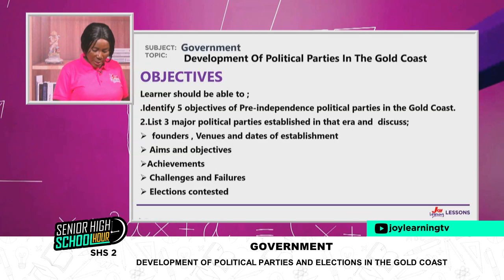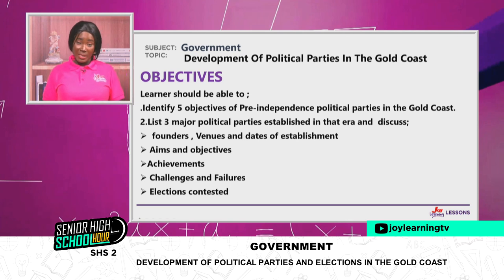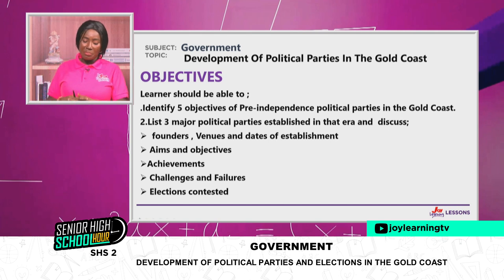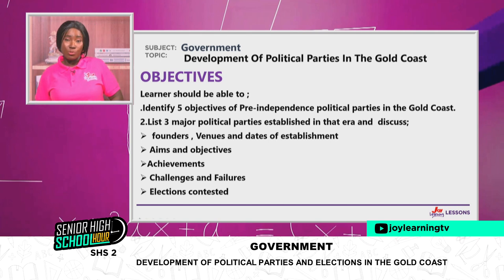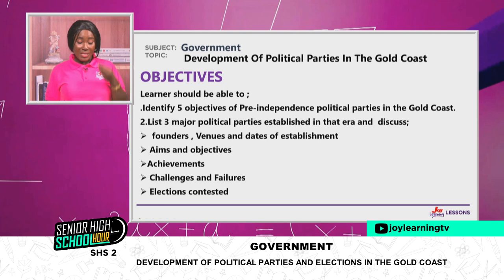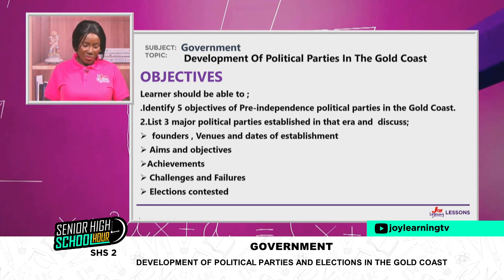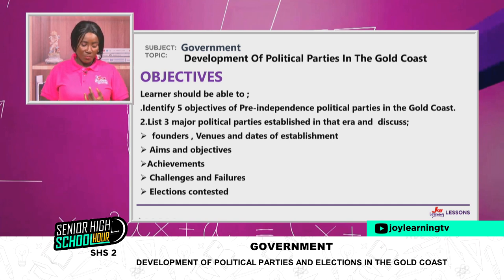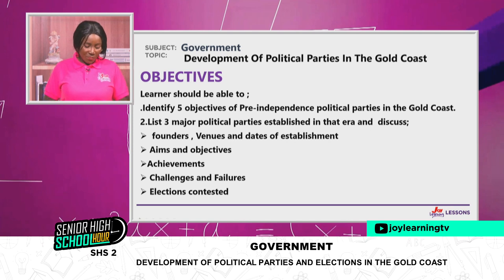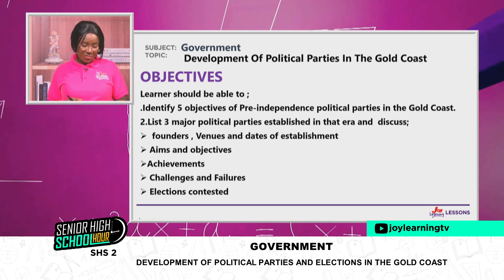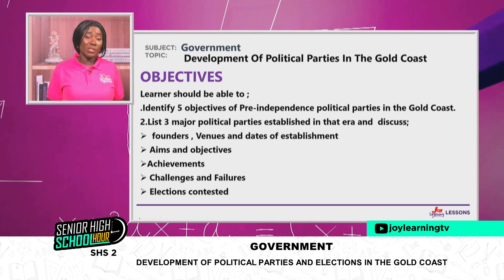Before we move on, let us look at what we want to achieve today. By the time our lesson is over, we should be able to identify five objectives of pre-independence political parties in the Gold Coast. We want to discuss at least three major political parties — their founders, venues and dates of establishment, aims and objectives, achievements, challenges and failures, and elections they contested.